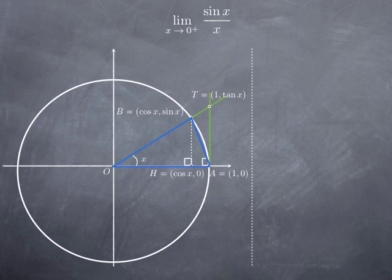The height is the length BH, and this length is sin x, because the point B has coordinates (cosine x, sine x). So one half base times height is one half times one times sin x, giving us sin x over 2.